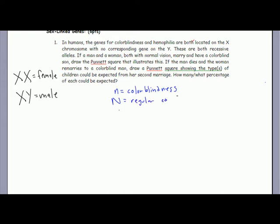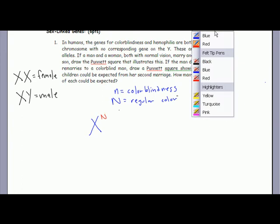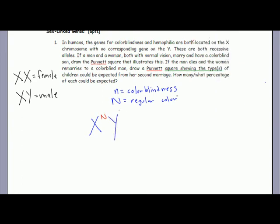For a man and woman both with normal vision - to have normal vision the man has to have X big N. And remember on the Y for the man there's nothing there, there's no chromosome that corresponds. So this is male, and the female obviously is going to have a double X.